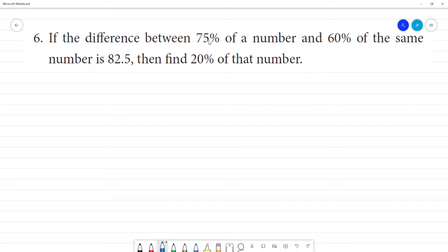If the difference between 75% of a number and 60% of the same number is 82.5, then find 20% of that number.